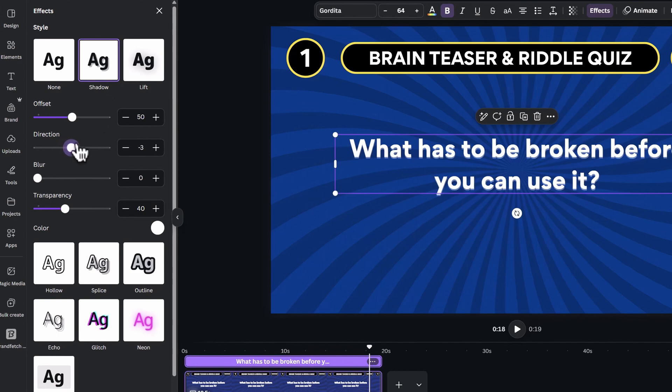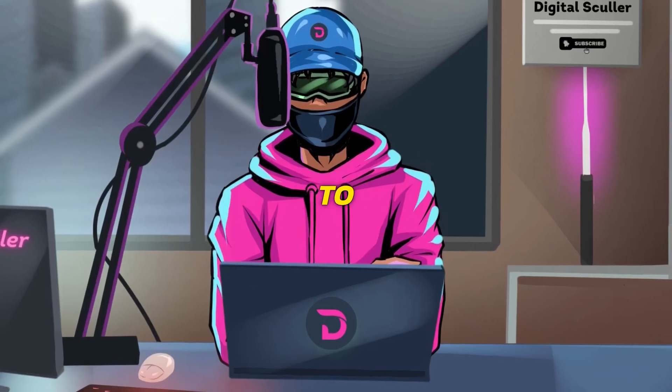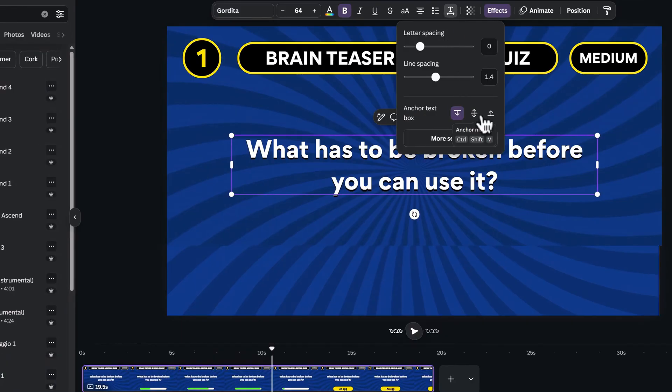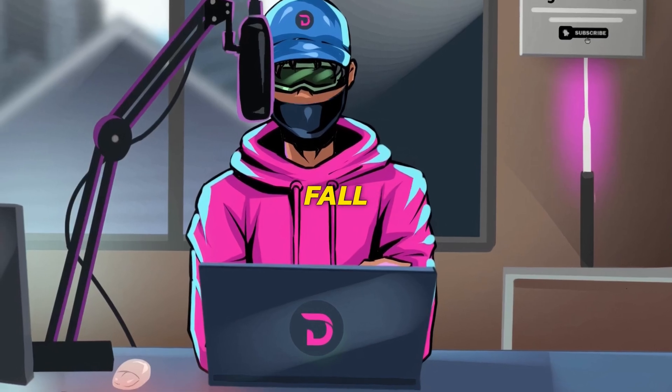Click on Effects at the top to add a shadow effect on it. Change the direction of the shadow to zero, increase the transparency to 100, and change the color to black. One more thing you need to do for the riddles is to go to the Advanced Settings at the top, and change the anchor text box to middle. This will make every text fall in the right space as intended.